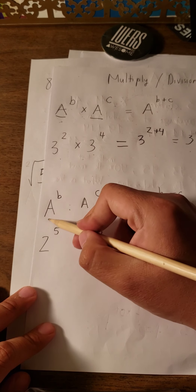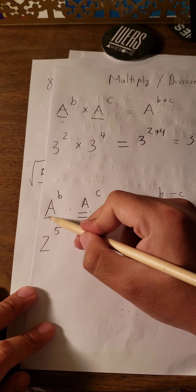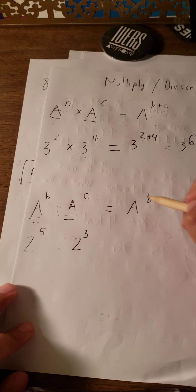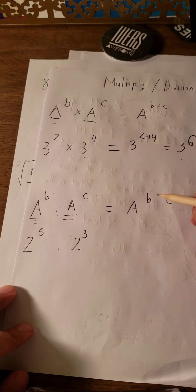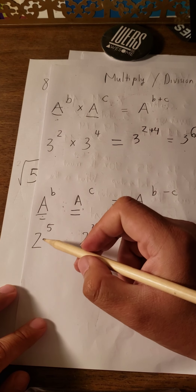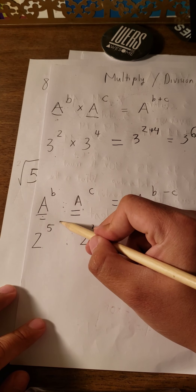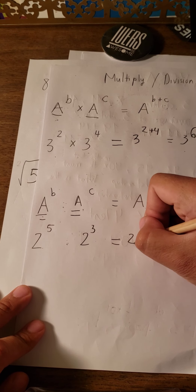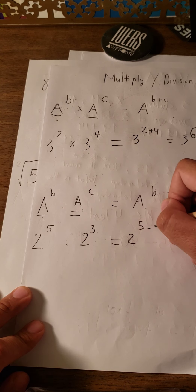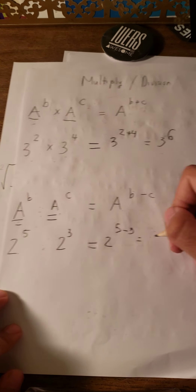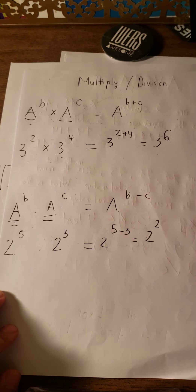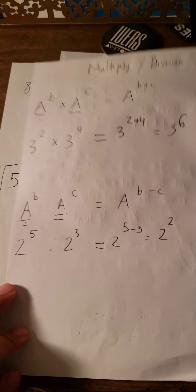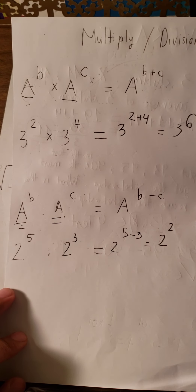The next rule also requires the same base. We have a^P divided by a^C, which gives a^(P−C). For example, 2^5 divided by 2^3 equals 2^(5−3) = 2^2. This also appears on tests, because some tests include both multiplication and division of exponents.